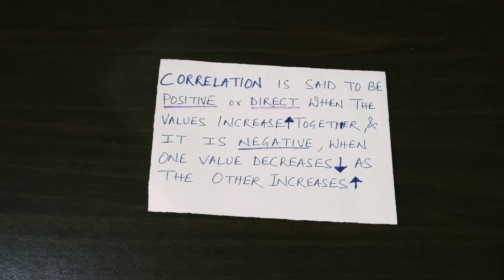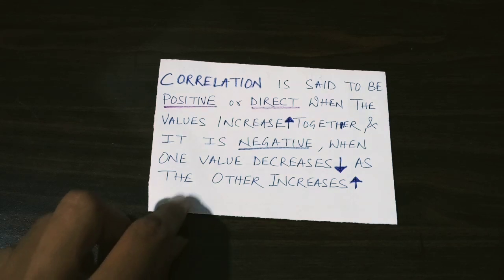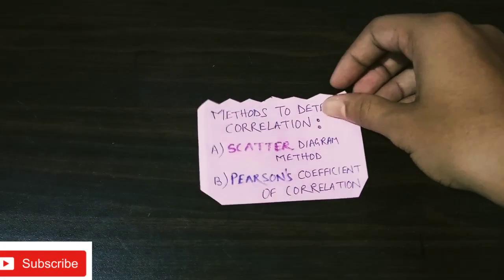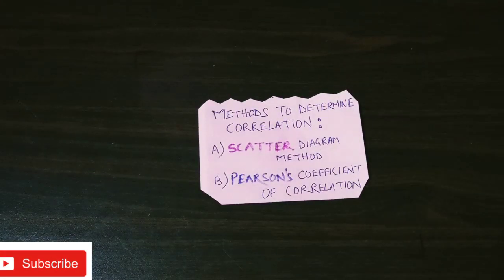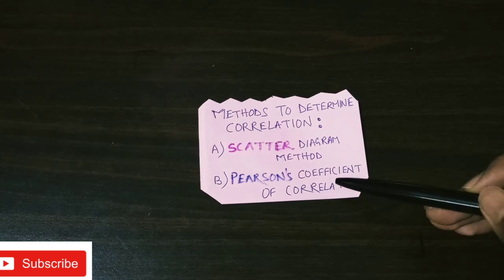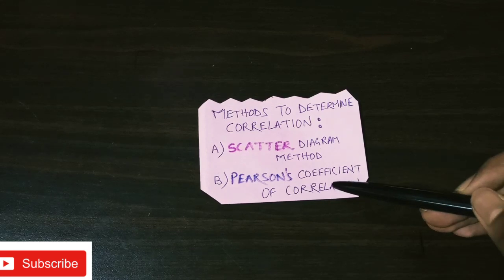Correlation is said to be positive or direct when both values increase together, and it is negative when one value decreases as the other increases — that is, inversely proportional. The methods to determine correlation are: first, the scatter diagram method, and second, Pearson's coefficient of correlation.